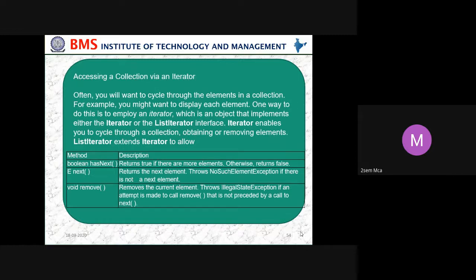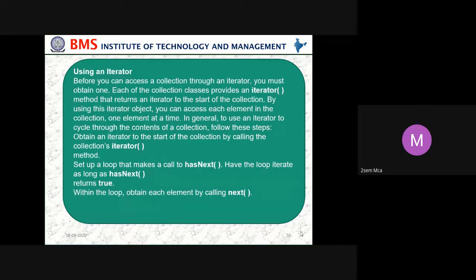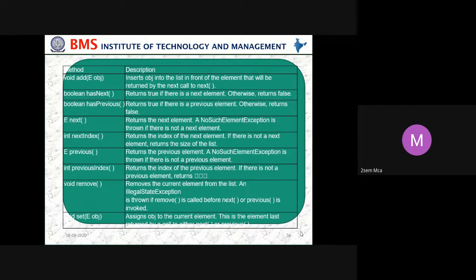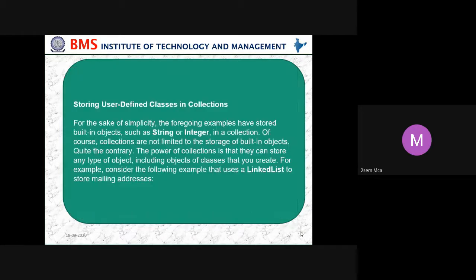Accessing a collection via an iterator uses boolean hasNext(), E next(), and void remove(). Before accessing a collection through an iterator, the method returns the iterator to start the collection. You can add objects, find the next element, find the previous element, check the index, and remove elements — these are built-in functions available for use. Similarly, sorting user-defined classes is possible using the sorting capability in the collections framework.